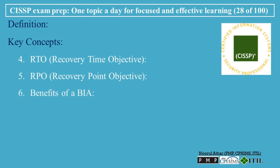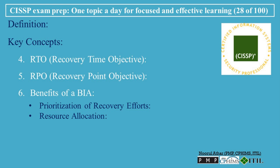Benefits of a BIA: Prioritization of Recovery Efforts — the BIA provides a clear understanding of which business functions are most critical, enabling organizations to prioritize recovery activities and resources during a disruption. Resource Allocation — by identifying critical functions and their recovery requirements, organizations can allocate the appropriate resources (e.g., technology, personnel, backup solutions) to minimize the impact of disruptions. Cost Savings — the BIA helps balance the cost of recovery solutions with the potential impact of downtime, allowing cost-effective decisions about backup, redundancy, and recovery strategies. Improved Decision Making — by understanding the potential consequences of downtime, organizations can make informed decisions about risk management, insurance, and third-party service-level agreements (SLAs).